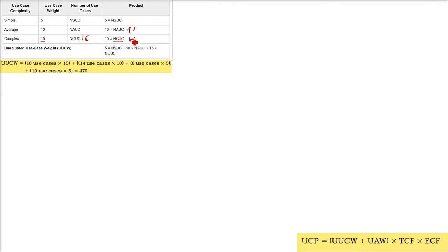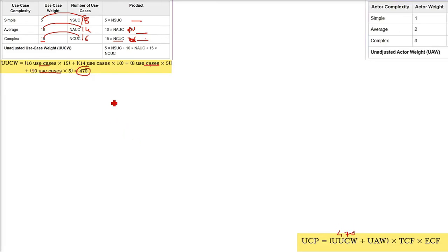16 use cases were there. So 15 is already the weight. So multiply. Now we have to write NCUC 16 in place of NAUC. That is the average complexity use cases is 14. And as I said, we have already 18. 8 plus 10, 18. You can use like that, or you can use 8 use cases and then 10 use cases. Ultimately, you have to multiply it with 5. So 5 into 18 will be this value. 10 into 14, you write here. 15 into 16, you write here. So we have already done the computation. 16 into 15 plus 14 into 10 plus 18 into 5, or you can do 8 into 5 plus 10 into 5. Finally, 470 will come. UUCW is 470.